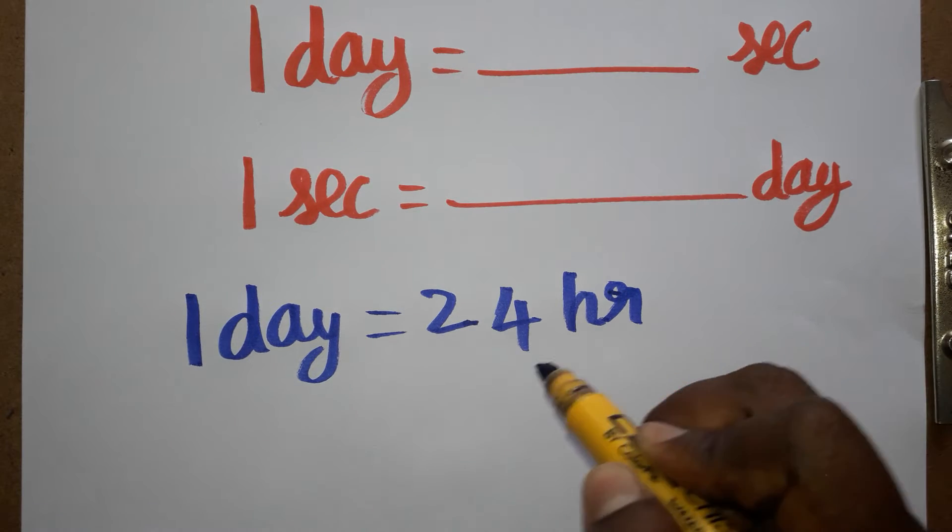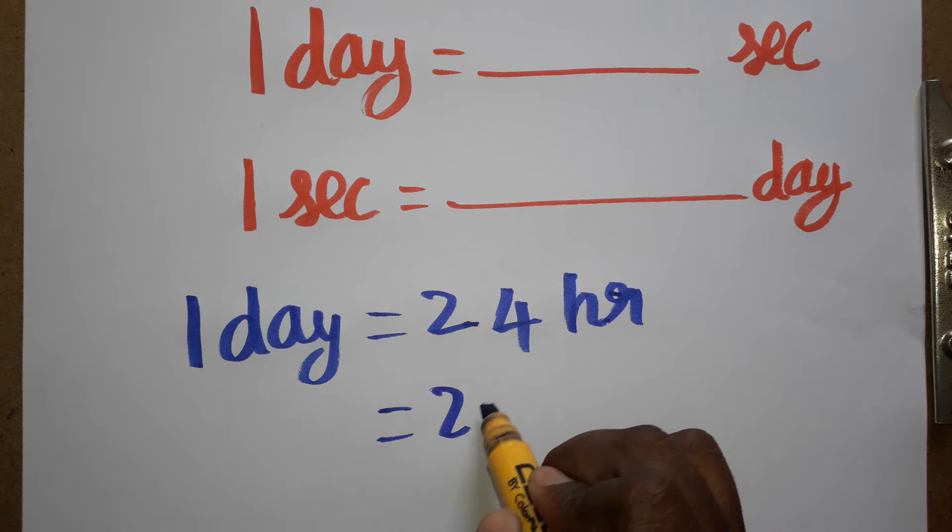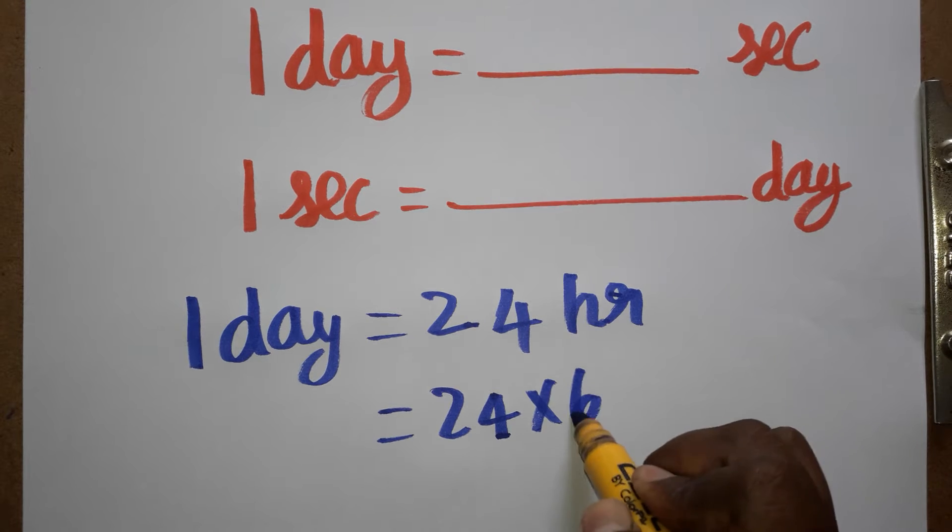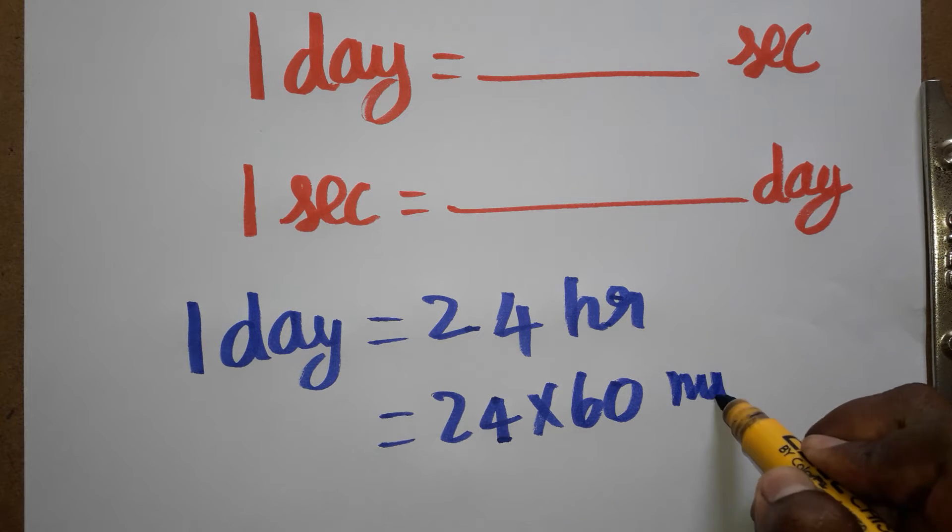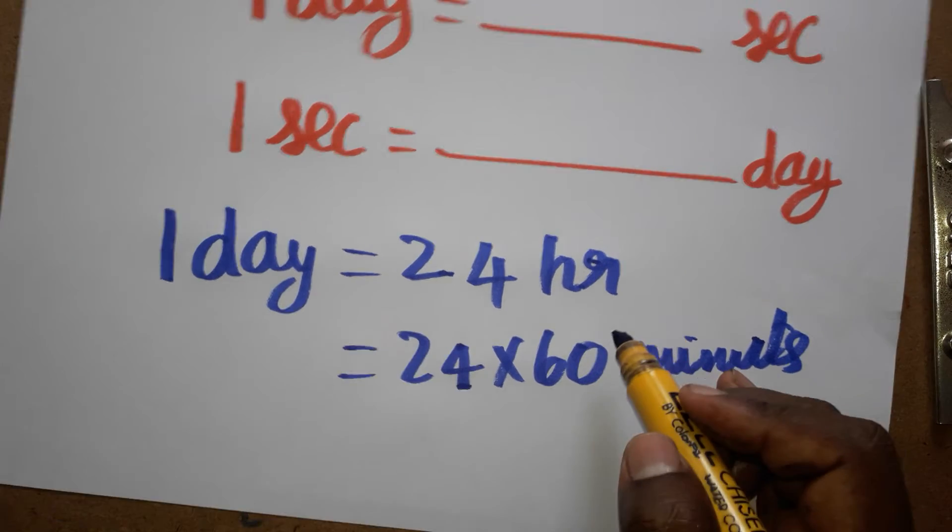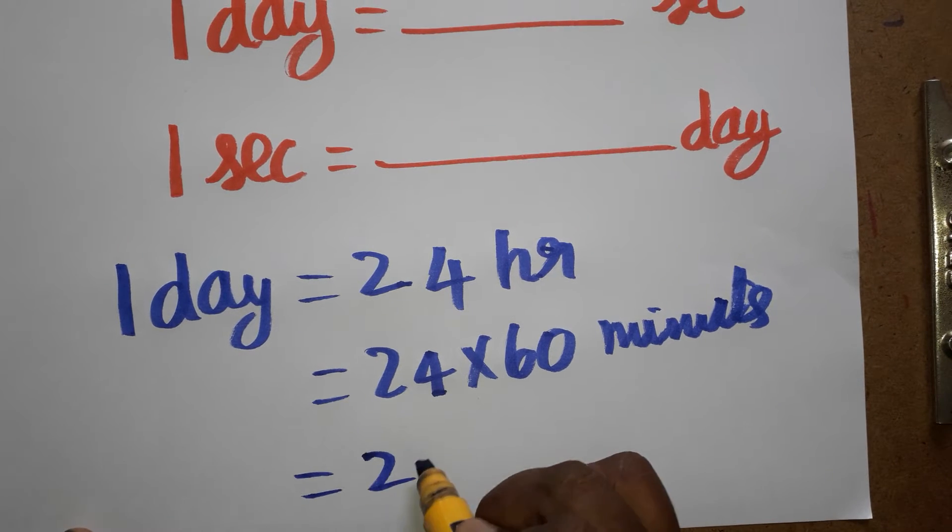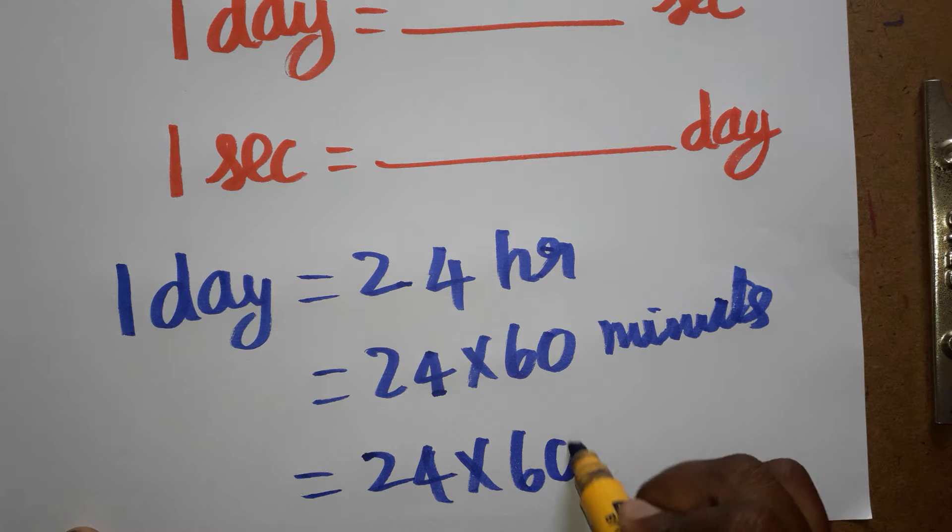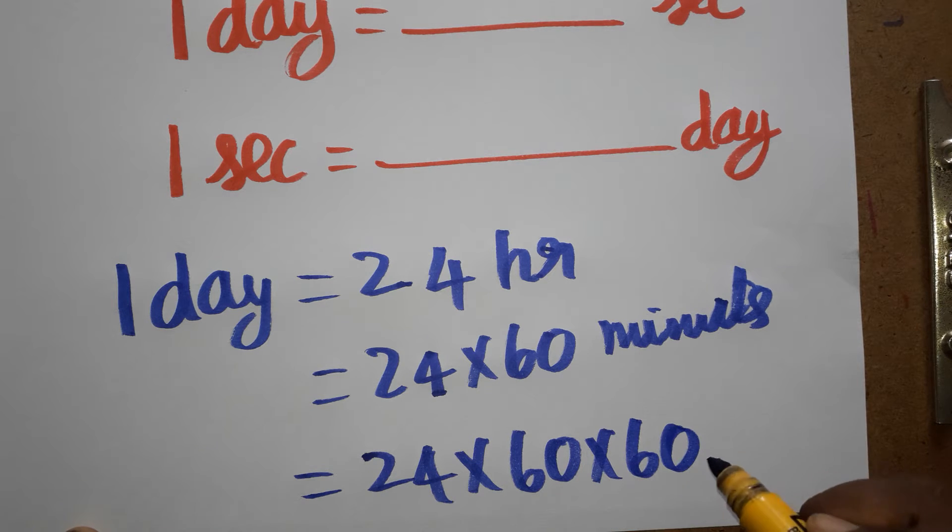24 hours. One hour is 60 minutes, that means it's 24 into 60 minutes. This many minutes we will get. Now one minute is 60 seconds, that means it's 24 into 60 into 60.